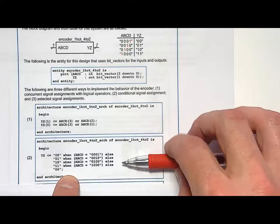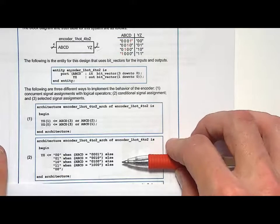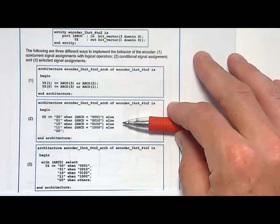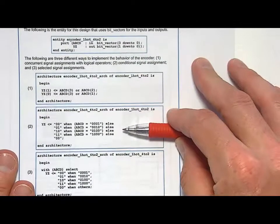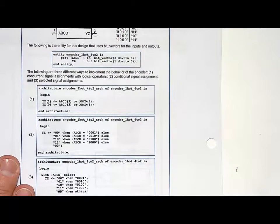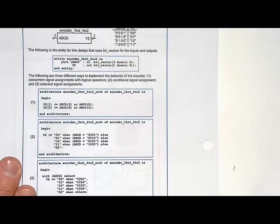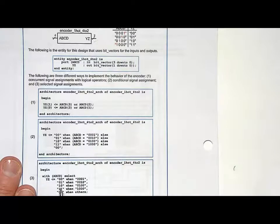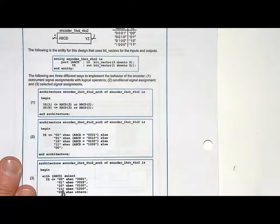Now, take a look at a selected signal assignment. Selected signal assignment is even less logic. All you do here is you say 'with', and you give it the input—so in this situation it was ABCD—and you say 'select'. And you just list out what is Y, Z, our output, going to get assigned. Zero zero, zero one, one zero, one one, when these guys. Now, here's two very important things that we need to look at in this conditional signal assignment here and the selected signal assignment here.